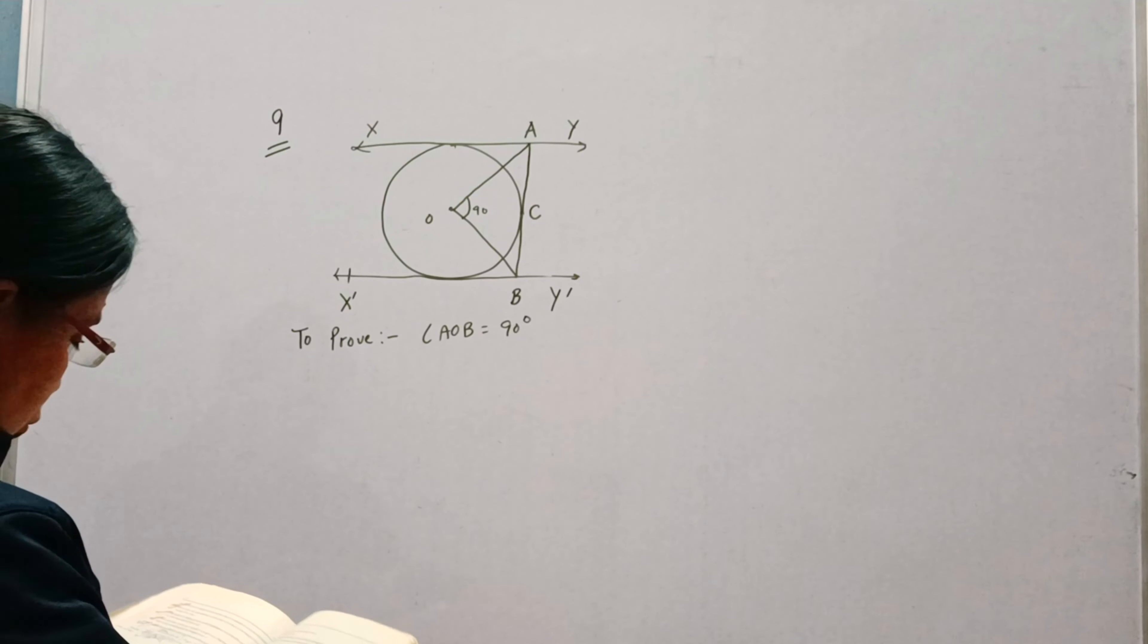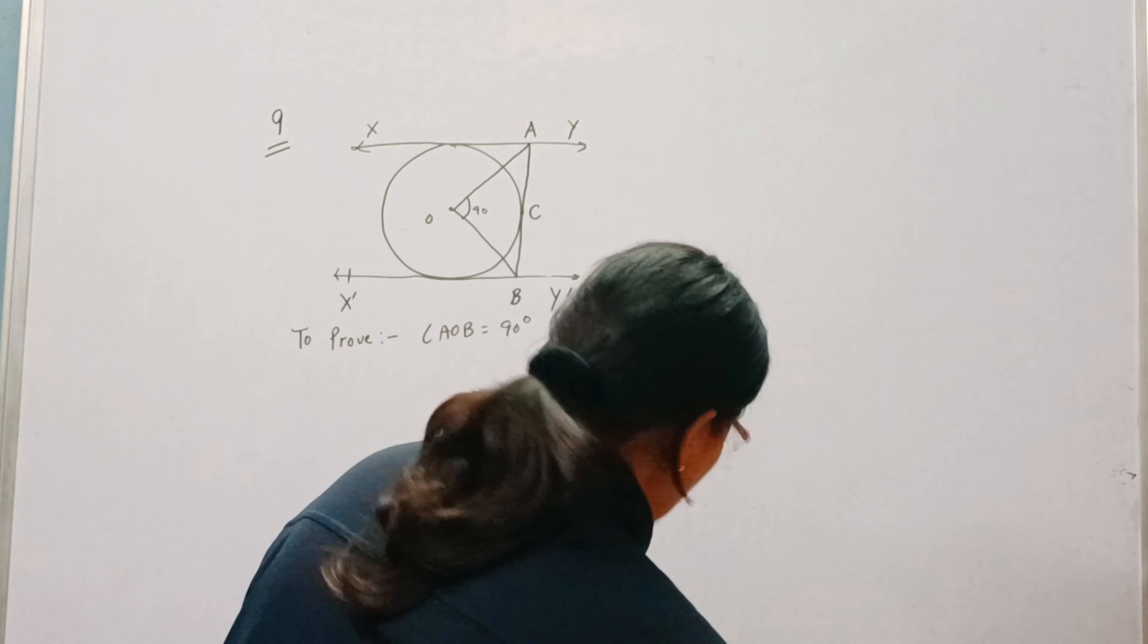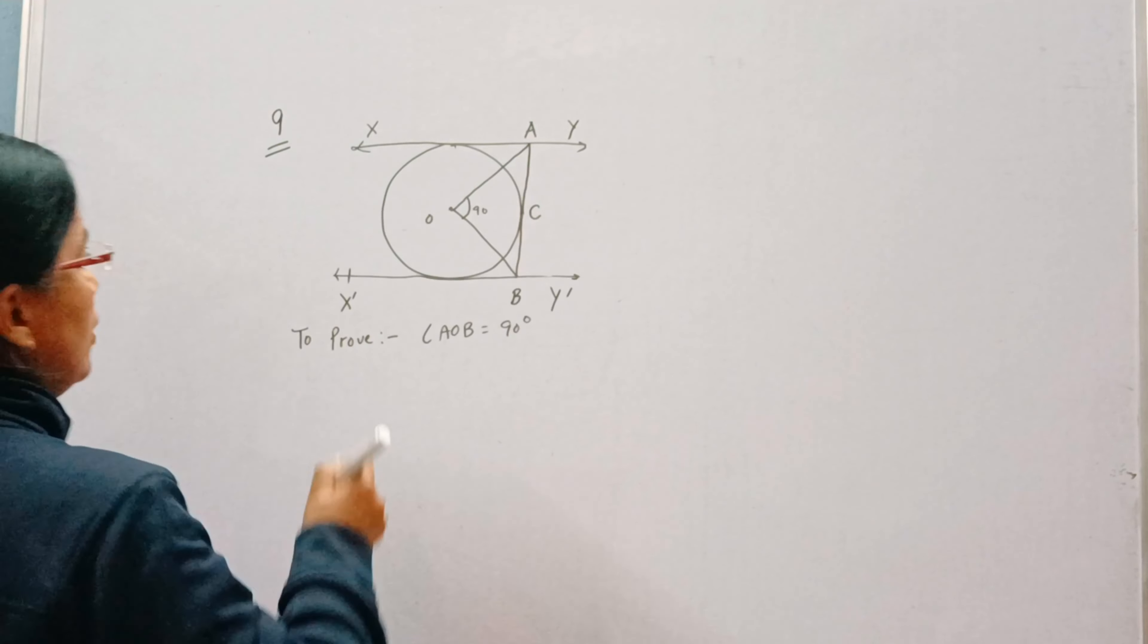This we need to prove and in the question p and q are the points of contact of tangent xy and x dash y dash and p oq is joined. This figure is given. Now we will do proof.